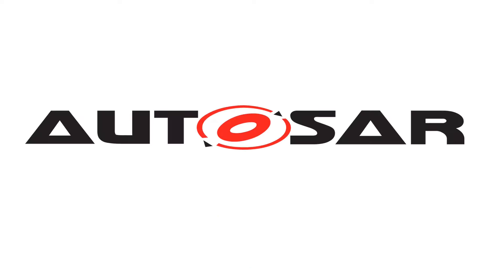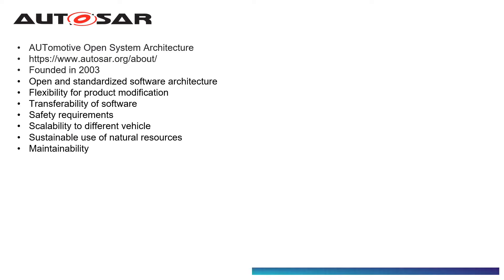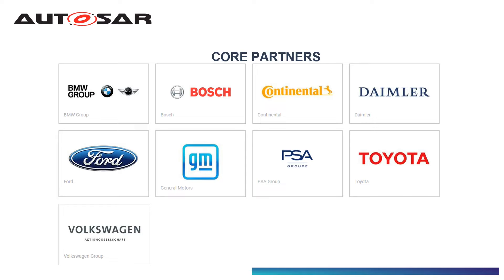This shows how important hardware and software portability is — a small change in architecture requires the whole system to be redesigned. This rework and lack of coordination between Tier 1 suppliers and OEMs in 2003 gave birth to a standard called Automotive Open System Architecture, or AUTOSAR. The motivation behind AUTOSAR was to increase flexibility for product modification and to leverage the scalability of solutions across ECUs, as well as to improve reliability, quality, and safety requirements. AUTOSAR's core partners include BMW, Bosch, Continental, Daimler, Ford, General Motors, PSA Group, Toyota, and Volkswagen.